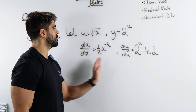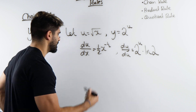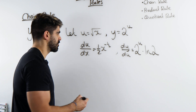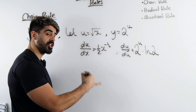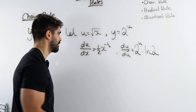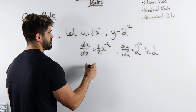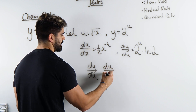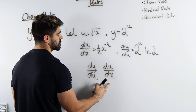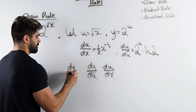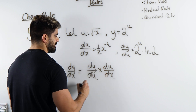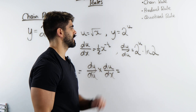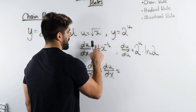Now how do we use this to get dy by dx? This is the chain rule. People think the chain rule is just 'bring down the power, knock one off the power' — that is not the chain rule, that's the chain rule applied to a power function. So I'm going to put these next to each other: dy by du and du by dx. What do you do to get dy by dx? You multiply them, because then the du's cancel.